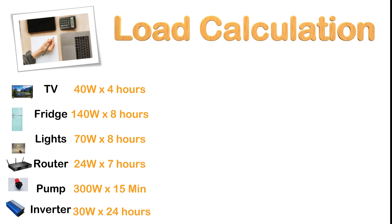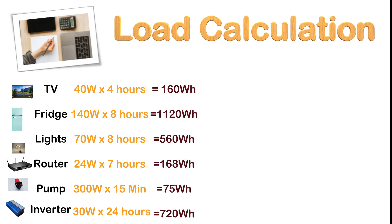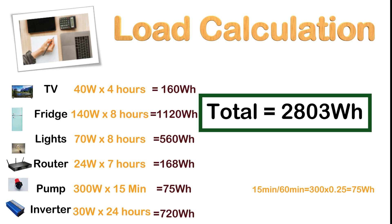Remember, idle consumption can be 10 watts for a 400–500 watt inverter and up to 30 watts for a 4,000–5,000 watt inverter, running approximately 24 hours a day. We then multiply the power consumption by how many hours we run the devices per day. If a device runs for less than an hour — say 15 minutes — divide 15 by 60 to get 0.25 hours. For example, a pump running for 15 minutes: 300 watts × 0.25 hours = 75 watt-hours. We then add up the total, which comes to 2,803 watt-hours.